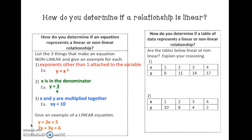How do you determine if a table represents a linear or non-linear relationship? We are going to first take a look at your x values and look at how much they are increasing or decreasing by. We have 1, 2, 3, 4 — so x is increasing by 1.